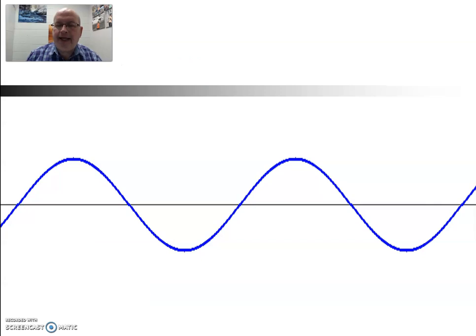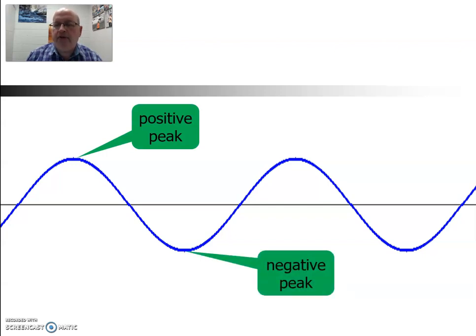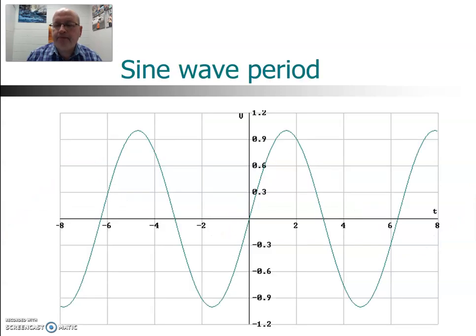So looking at this sine wave, how can we characterize? Well, first of all, we have some simple things here. The highest point is called the positive peak. The lowest point is called the negative peak.